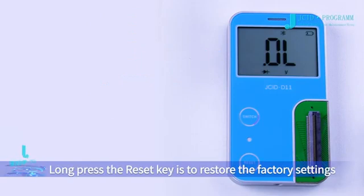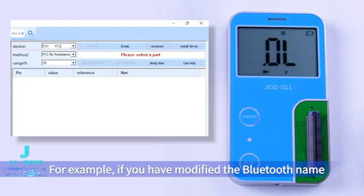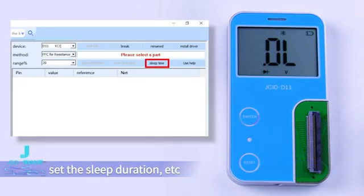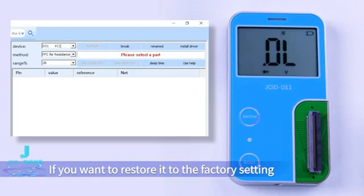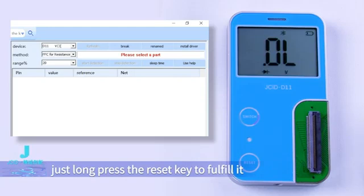Long press the reset key to restore the factory settings. For example, if you have modified the Bluetooth name, set the sleep duration, etc. If you want to restore it to the factory setting, just long press the reset key to fulfill it.